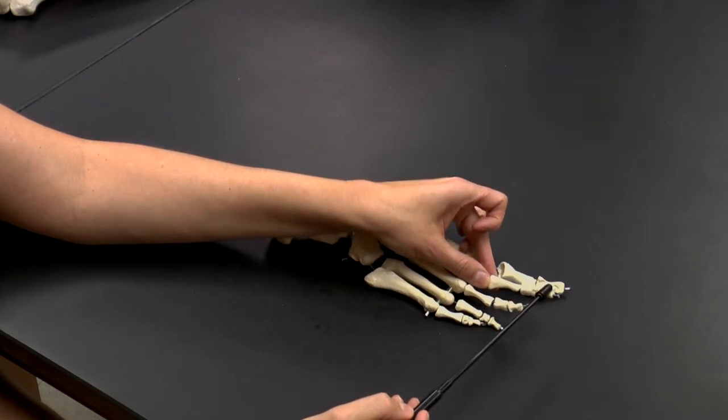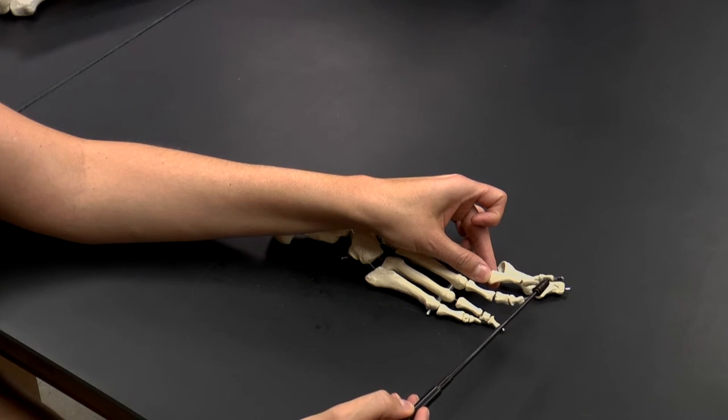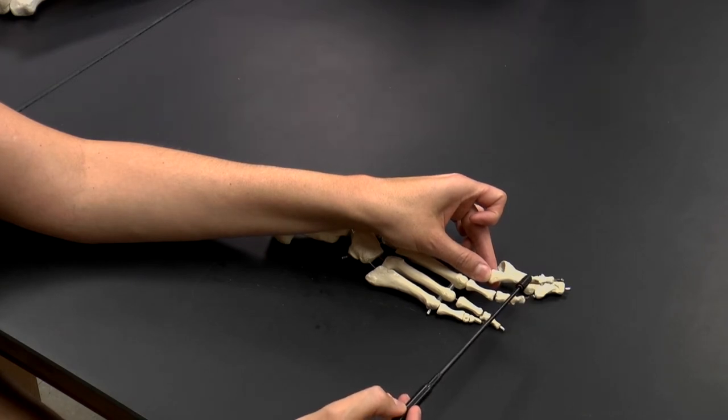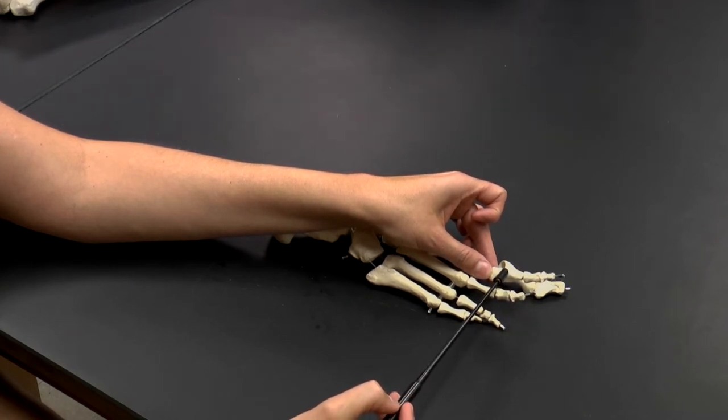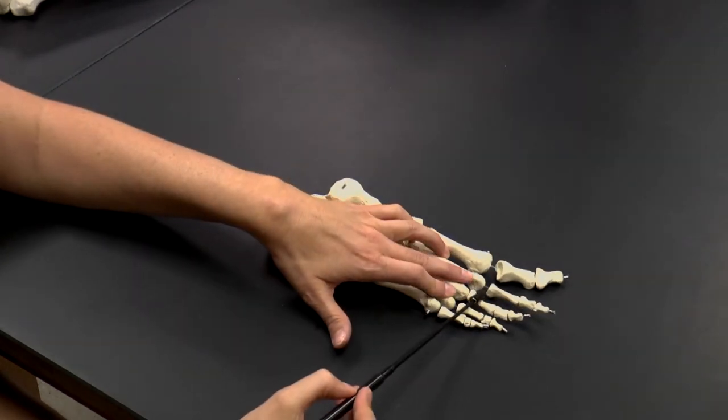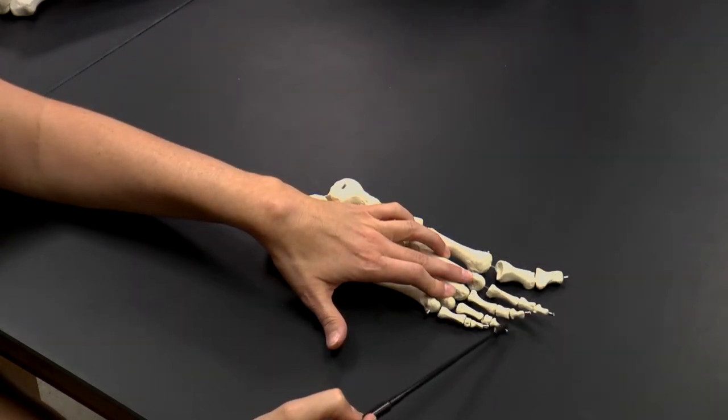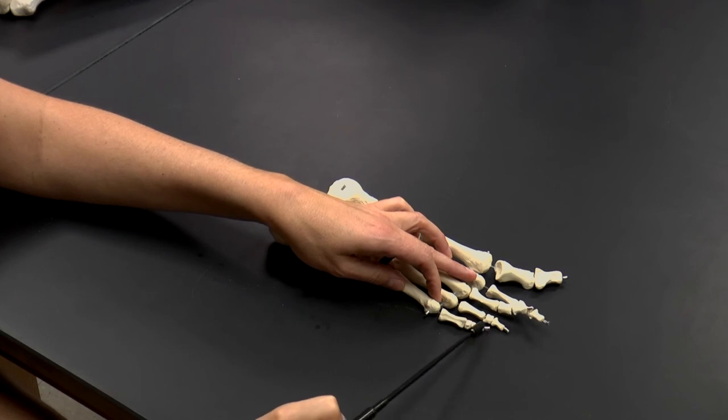So distal, farthest away, middle, in between, and proximal, closest to the body. And you can see that we could go through digit three, digit four, and digit five, and you can see the same distal, middle, and proximal.